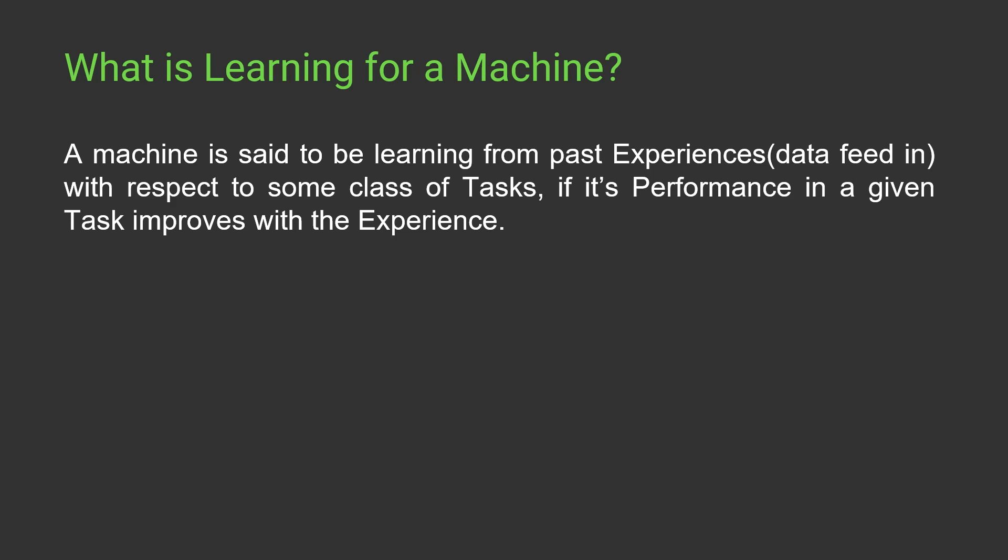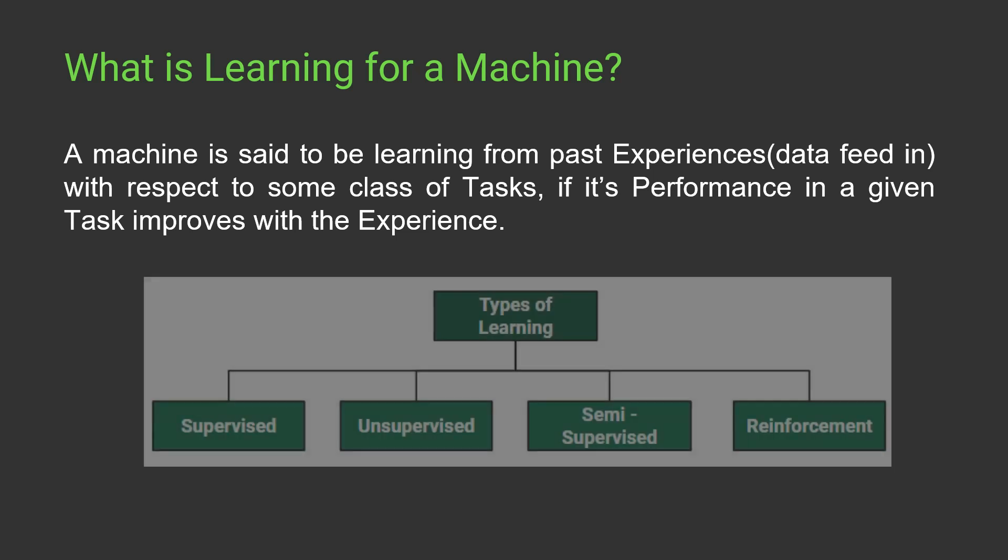In case of us human beings, for example, if we are learning how to add two numbers, initially we will make some mistakes, but gradually with time, as we learn the concepts correctly, we will make no mistakes — that means we are learning. In the same way, if we give a task to a machine and with time or by continuous practice it keeps on improving its performance, we say that yes, this machine is learning.